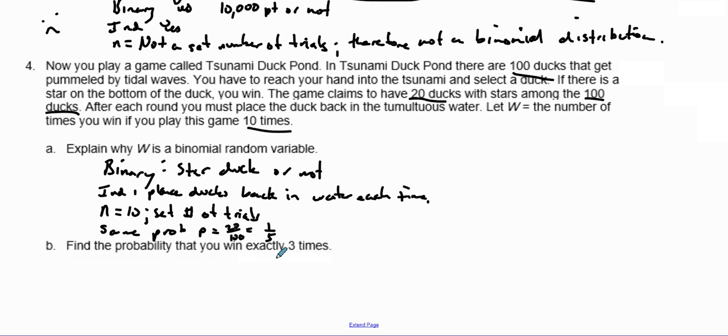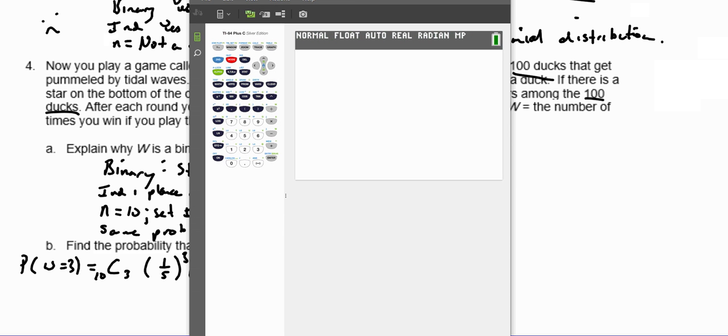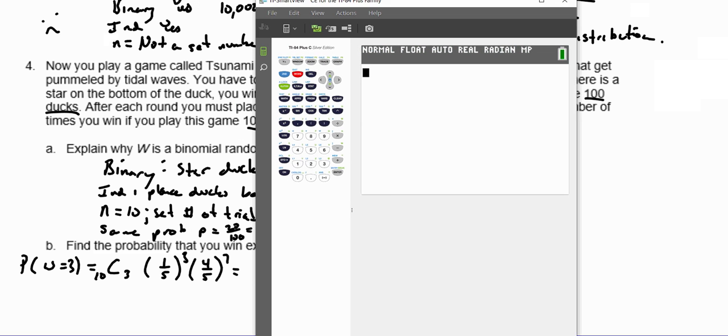Now the question is, find the probability that you win exactly three times. We're trying to find the probability that W equals 3. We're going to take 10 choose 3, with probability of success 1/5 raised to the 3rd power, times the probability of failure 4/5 raised to the 7th power. We can put this into our calculator.